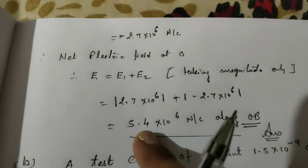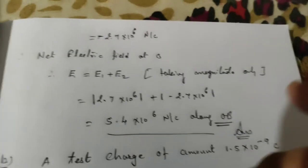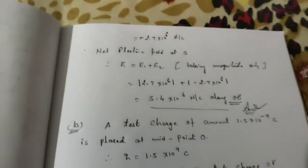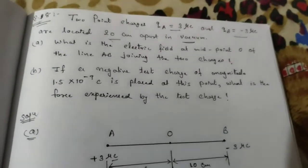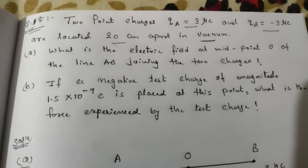E₁ plus E₂ by using superposition principle gives total answer 5.4 × 10⁶ Newton per coulomb along OB direction. This is the first answer.